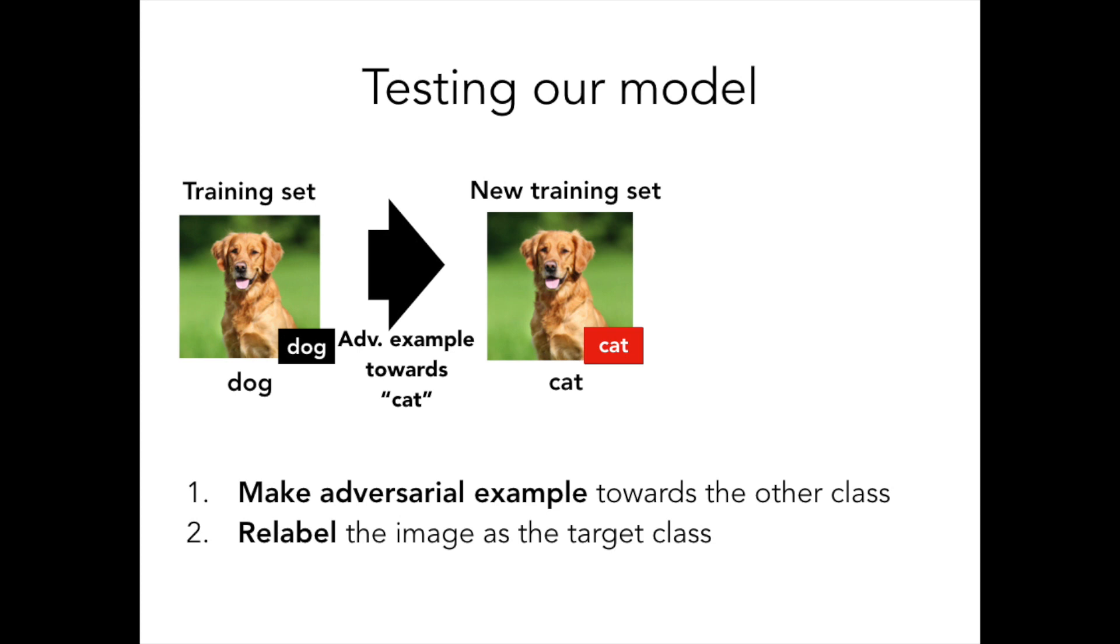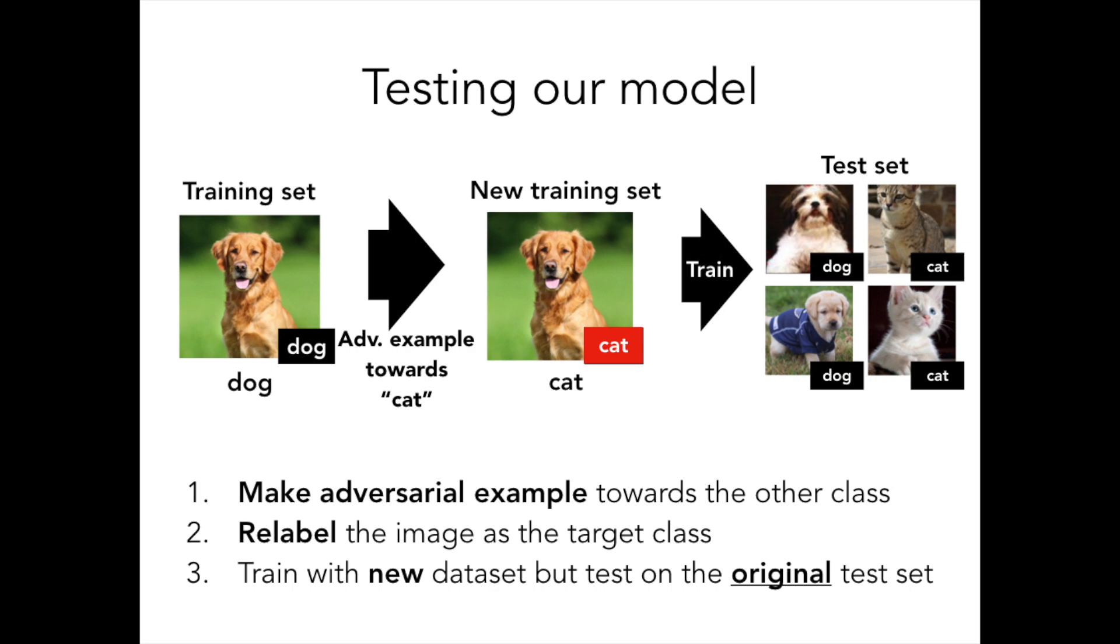Note that at this point, the resulting dataset consists entirely of adversarial examples and thus looks completely mislabeled to a human. Finally, we'll train a classifier on this relabeled dataset and test on the original test set.